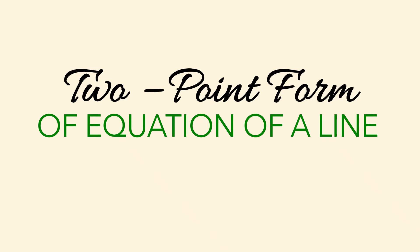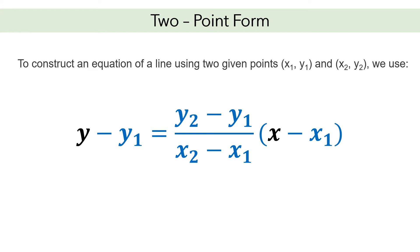In this video, we are going to discuss two-point form of equation of a line. To construct an equation of a line using two given points, x sub 1, y sub 1, and x sub 2, y sub 2, we use this formula: y minus y sub 1 equals y sub 2 minus y sub 1 over x sub 2 minus x sub 1, times x minus x sub 1. This formula is derived from the point-slope form, only that instead of using m, we use the formula for slope, since the value of slope is not given.